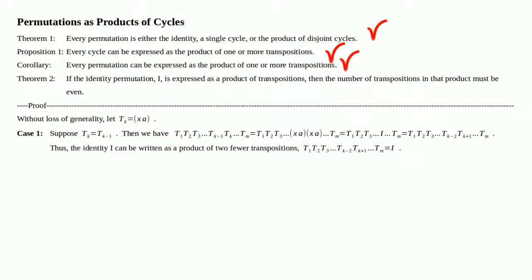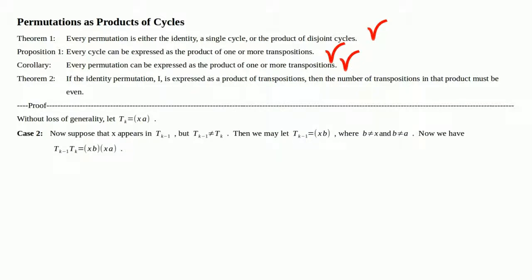So that's Case 1: if t_k and the previous transposition t_{k-1} are the same, we simply eliminate them from the product because together they contribute nothing — their product is the identity. Now let's look at Case 2.